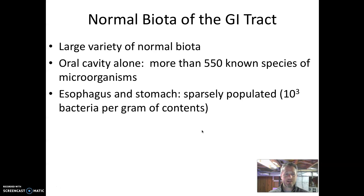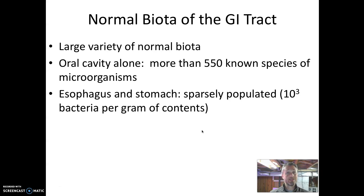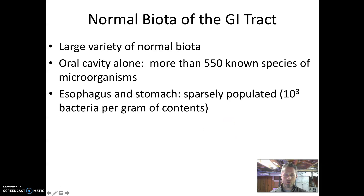As we progress down the digestive tract into the esophagus and the stomach, these parts have much, much fewer microbial cells. The esophagus is a tube where we're constantly swallowing boluses of food, scraping the sides every time we swallow, making it extraordinarily difficult for microbes to survive. The same is true for the stomach because of the acid — it's an extraordinarily acidic environment and very few microbial cells are acidophilic enough to survive there. In these structures, if we measure cells per gram of contents, there are only thousands of cells per gram.